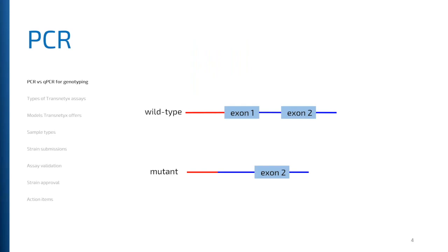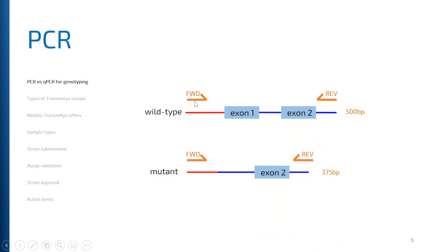Getting started, most of us are pretty familiar with PCR as a method for genotyping. In PCR you rely on a band size to determine the genotype of your animals. If you have a mutant animal — for example, a model that has a knockout of exon 1 of a gene — you would have a forward and a reverse primer set that span this region of interest. In your wild type allele you'd get a band size of around 500 base pairs, whereas in the mutant it would be shorter — around 375 base pairs — because of the lack of exon 1.